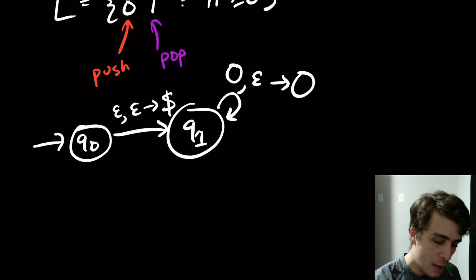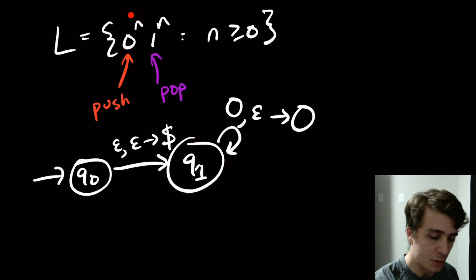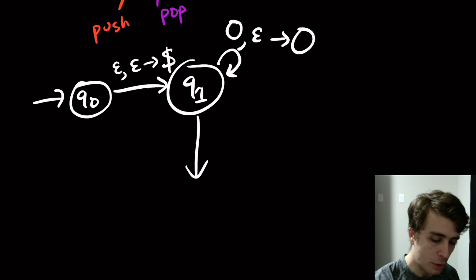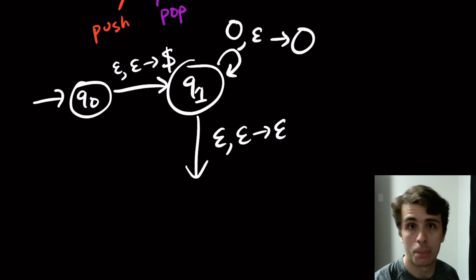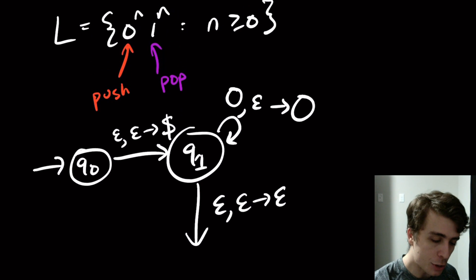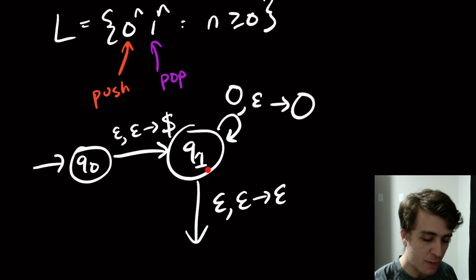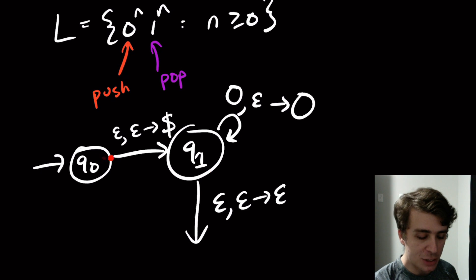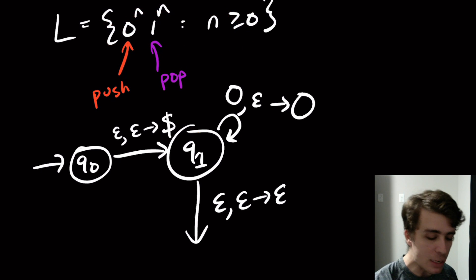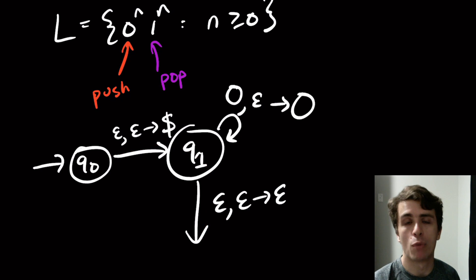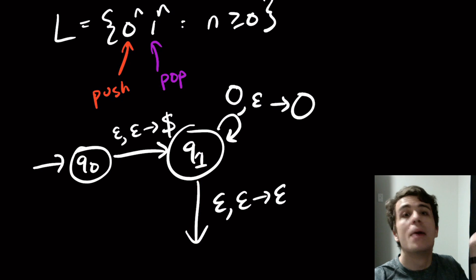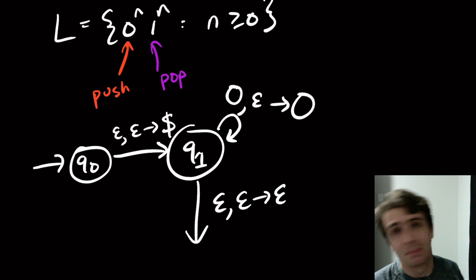Now we need to transition to reading the ones. I'm going to use what I call the 'triple epsilon transition.' If I had a transition out of q1 directly on reading a one, that wouldn't allow me to accept the empty string — and the empty string is in this language. I need a way to progress through the machine with the empty string as input. This is non-deterministic, but context-free grammars are non-deterministic too, so it's not a big deal.